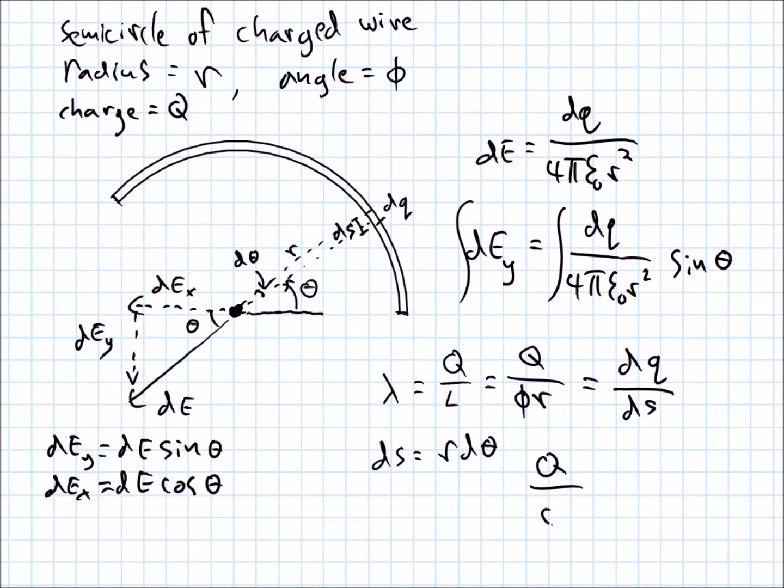And by the same arc length formula, Ds is equal to R Dtheta. So, Q over phi R equals DQ over R Dtheta. We can ditch these R's. And I could, I guess, have just defined, rather than linear charge density, a sort of angle charge density. Charge over angle, charge over angle. Oh, well. So, we're trying to get Dtheta, recall, we're trying to get Dtheta up into our integral here. We have DQ, and we don't want that. So, let's solve this thing for DQ and plug whatever mess we get in. So, multiplying over the Dtheta, DQ is equal to Q over phi times Dtheta.